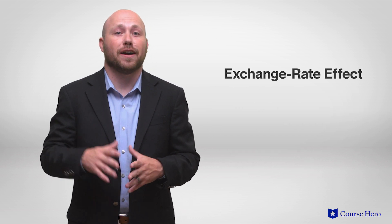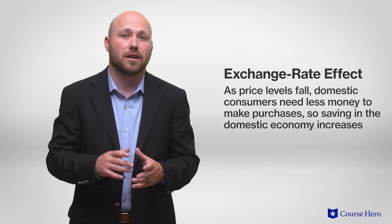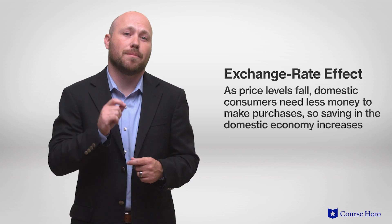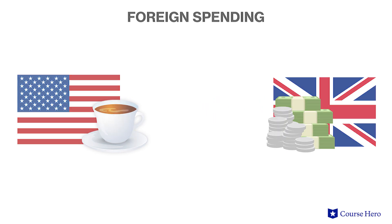The third reason is the exchange rate effect, or the international effect. As price levels fall, domestic consumers need less money to make purchases, so savings in the domestic economy increases. In very simple terms, a lower price level causes domestic economy exports to become cheaper, which stimulates foreign spending. Economies abroad are more likely to purchase goods and services from the domestic economy when they are cheaper. Additionally, domestic consumers are likely to purchase fewer imports. This causes net exports to rise, which increases aggregate demand.